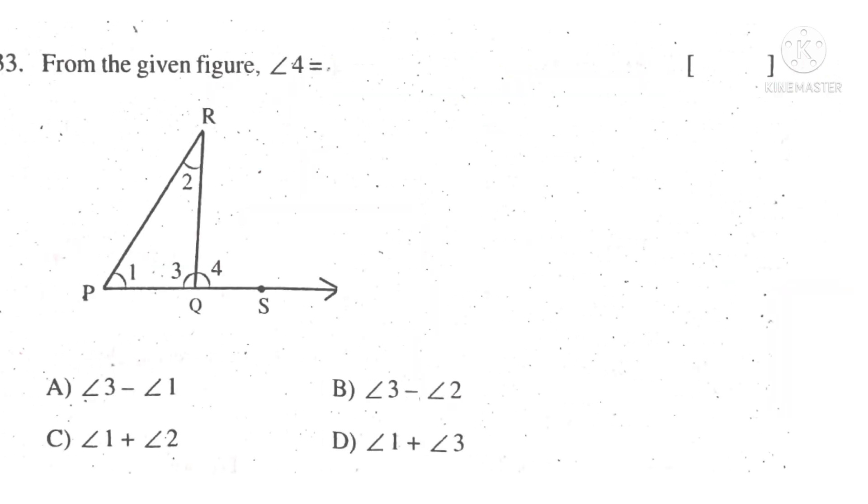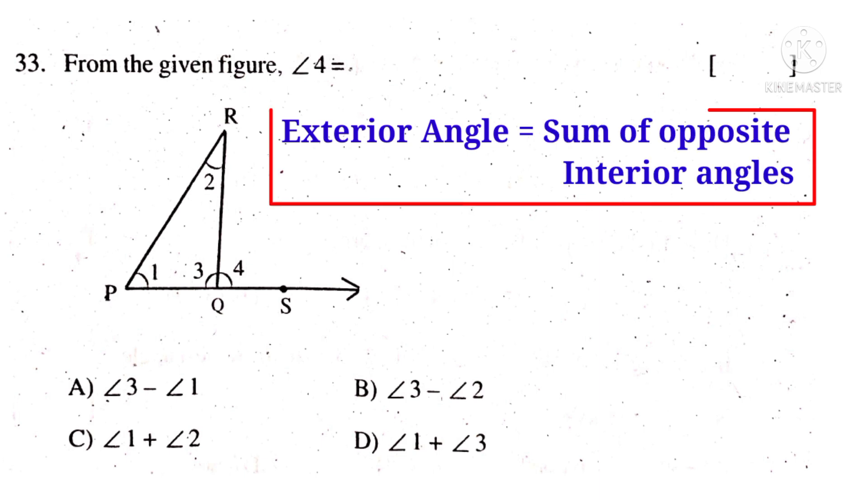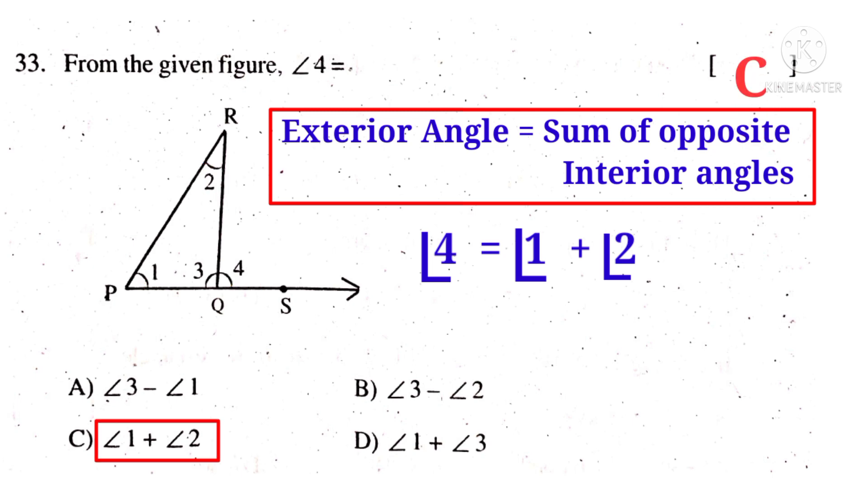Now the last bit, 33 bit. From the given figure, angle 4 is equal to dash. We know that in a triangle, exterior angle is equal to sum of opposite interior angles. Here the exterior angle is angle 4. Opposite interior angles are angle 1 and angle 2. So angle 4 is equal to angle 1 plus angle 2 is the answer. So the correct choice is C.